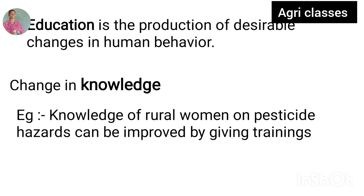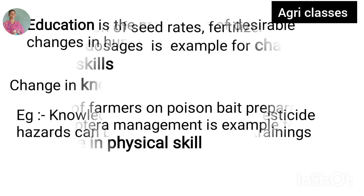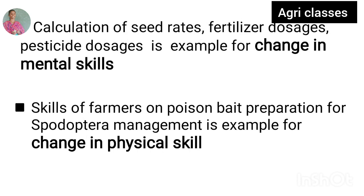For example, we have to change our knowledge in rural pesticides. Next, we have to change our mental skills and physical skills. For example, mental skills include seed rate calculations, fertilizer doses, and pesticide doses. Physical skills include poison bed preparation to control spermoptera.